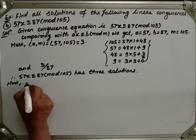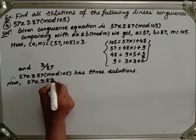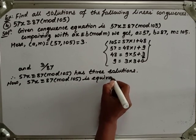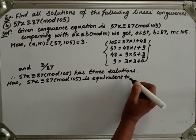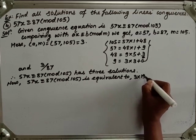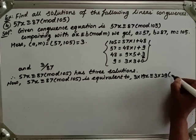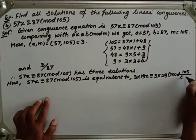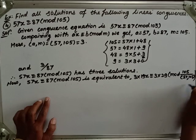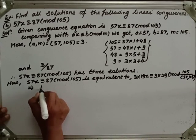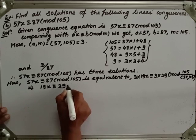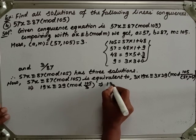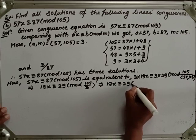Now, 57x ≡ 87 (mod 105) is equivalent to 3×19x ≡ 3×29 (mod 105/GCD(57,105)), which is equivalent to 19x ≡ 29 (mod 35).